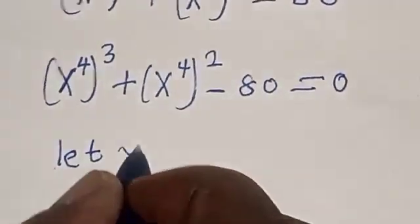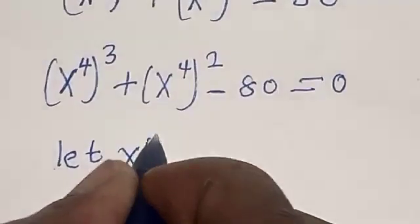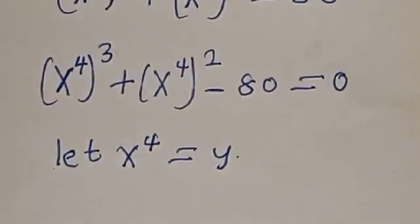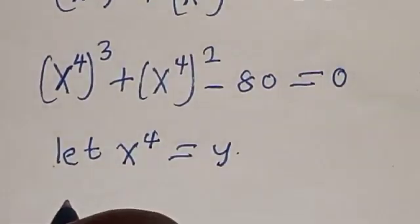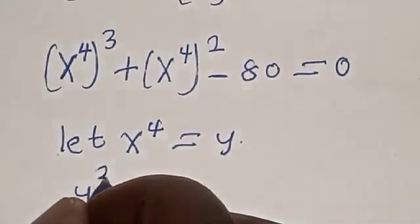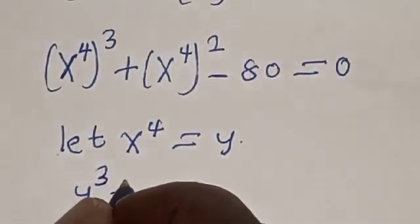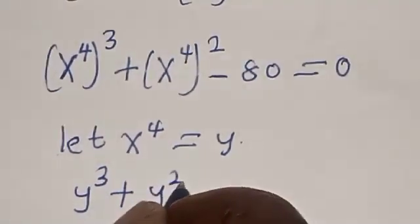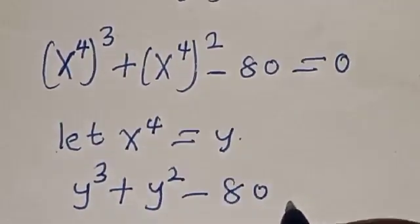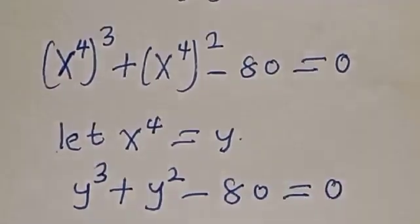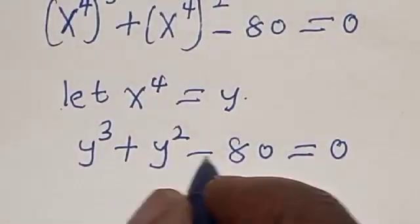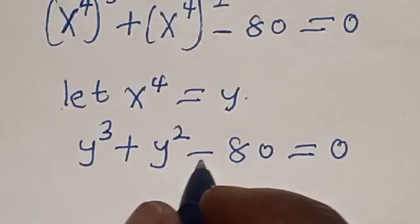Let x raised to power 4 equal y. Now we have y raised to power 3 plus y squared minus 80 is equal to zero. Now let's find the root of this equation.